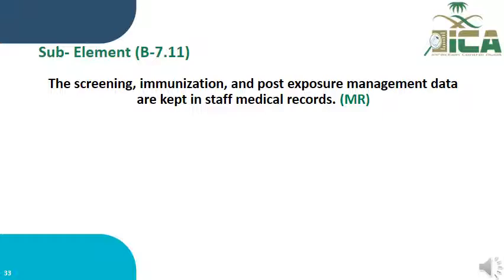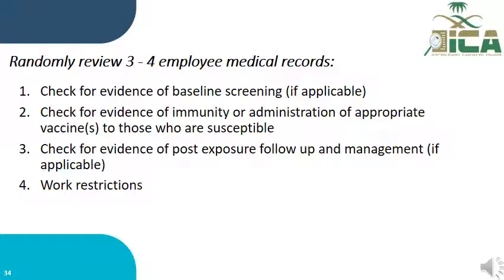Sub-element B7.11 states that screening, immunization, and post-exposure management data are kept in staff medical records. Assessment is through medical record review only. You will randomly select three to four employee medical records from different departments for a representative sample, and check for evidence of baseline screening, immunity or vaccination, post-exposure follow-up and management, and work restriction.